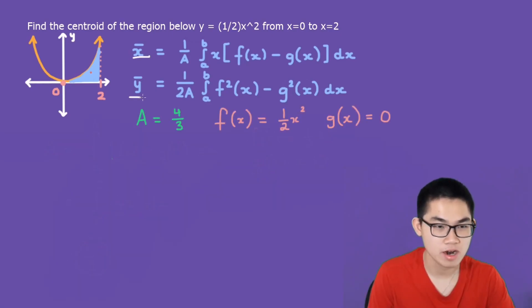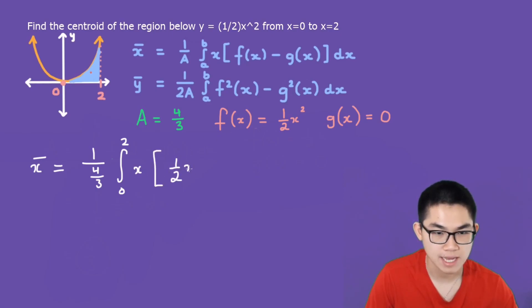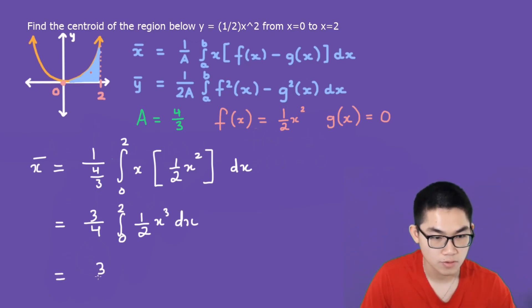Let's solve for x-bar and y-bar. So x-bar is equal to 1 over 4/3 times the integral from 0 to 2 of x times f(x), which is 1/2 times x squared minus 0. This will be 3/4 times the integral from 0 to 2 of 1/2 of x to the power of 3 dx. And this is simply 3/2.